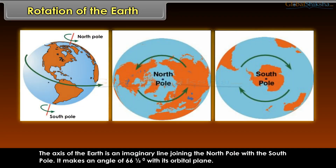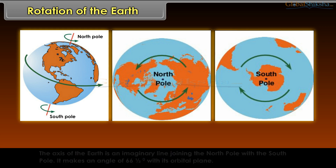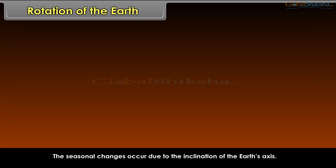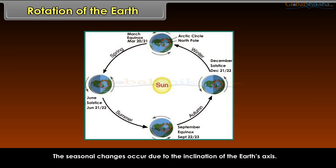The axis of the earth is an imaginary line joining the north pole with the south pole. It makes an angle of 66 and a half degrees with its orbital plane. The earth completes its rotation in 23 hours, 56 minutes and 4 seconds. The orbit of the earth is elliptical. The seasonal changes occur due to the inclination of the earth's axis.